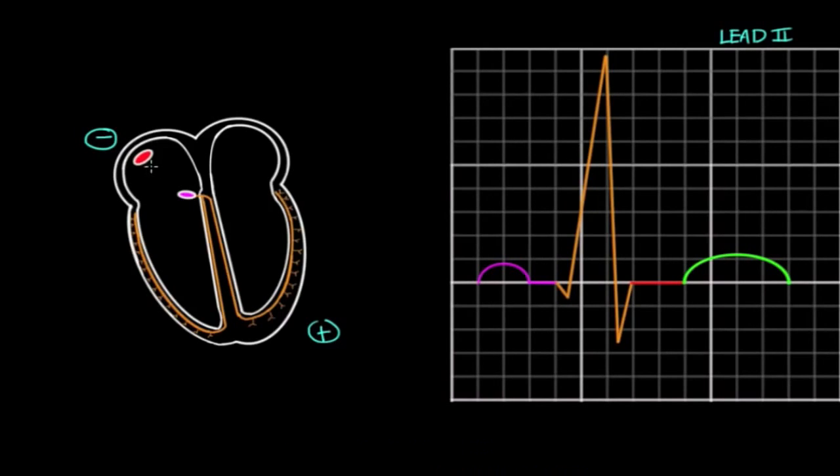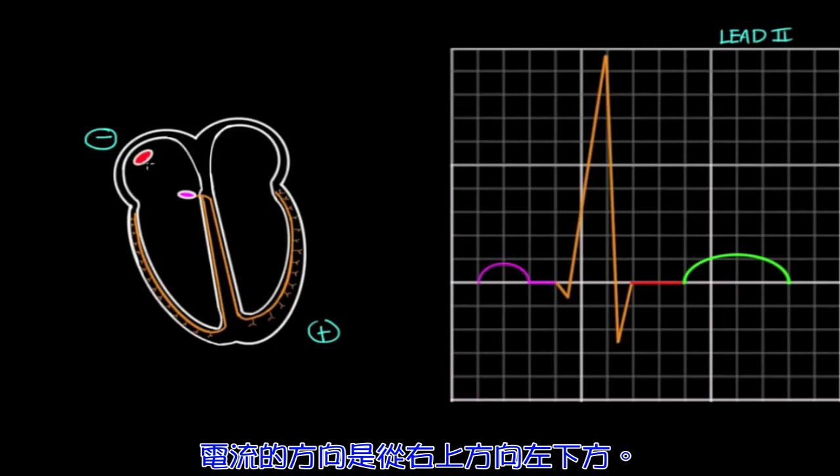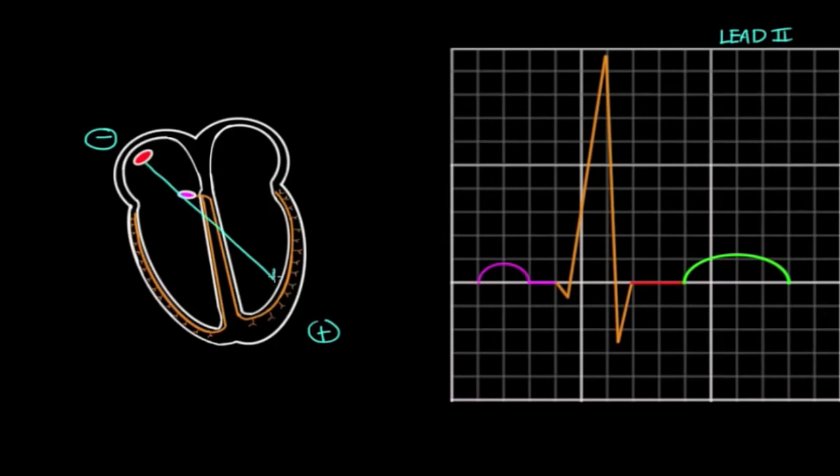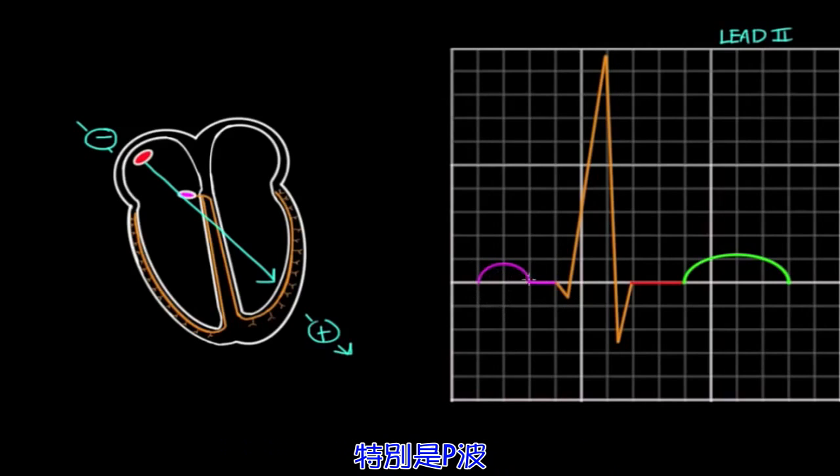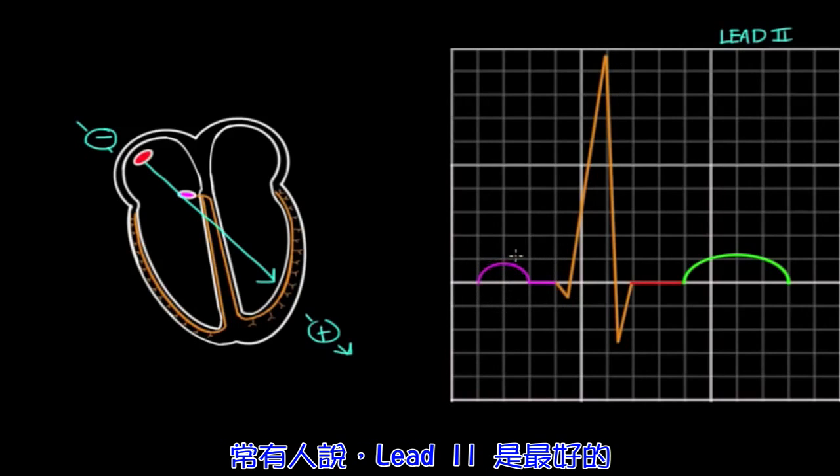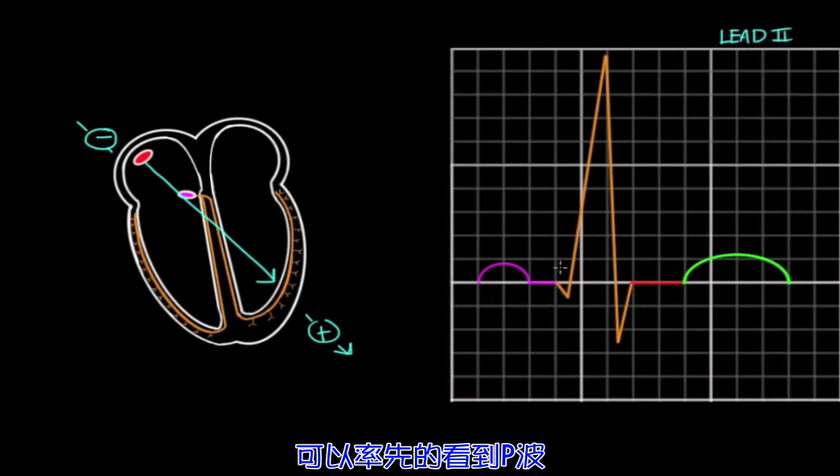Lead 2 has a negative electrode on the right hand and a positive electrode on the left foot. In a healthy heart, the wave of depolarization overall runs from the top right to the bottom left. So you can see that lead 2 measures voltage created in this direction. Therefore, lead 2 is commonly singled out for more simple information such as heart rate and rhythm, because it gives you a pretty good view of the waves, particularly the P wave. Often people say that lead 2 is the best lead to see the P wave.